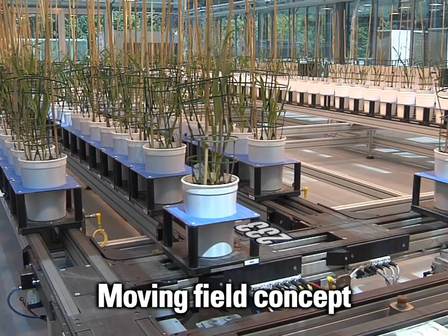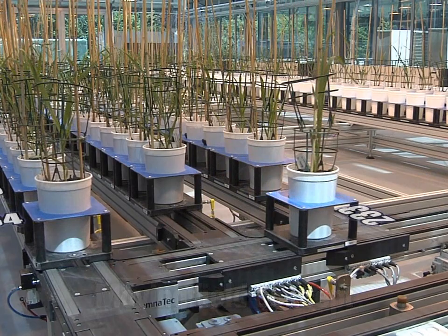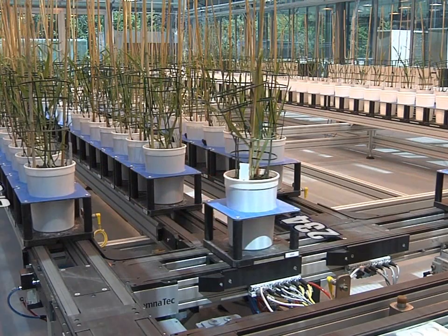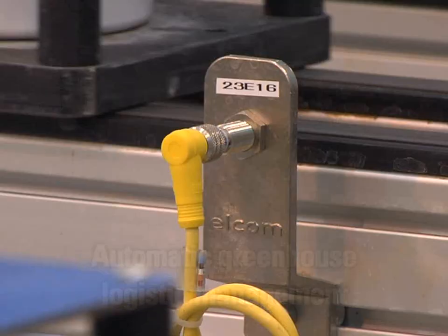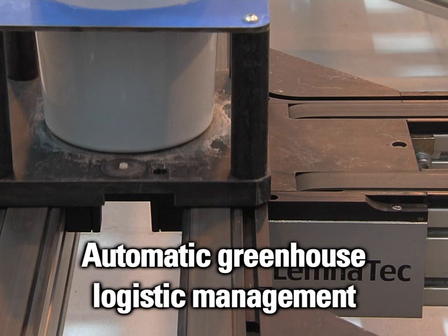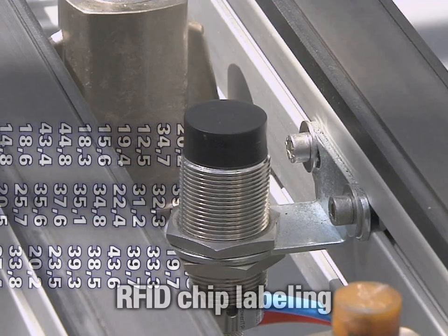Plants are phenotyped continuously with the so-called moving field concept, enhancing the statistical power of greenhouse trials. Hotspots are eliminated and growth conditions are homogenized by continuously moving the plants through the whole greenhouse on predefined or random patterns.